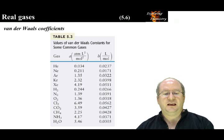Here are the A and B coefficients for some common gases. They are only valid at 298 Kelvin. The van der Waals coefficients are temperature dependent.